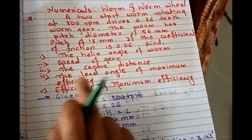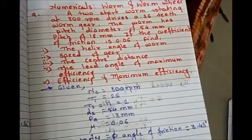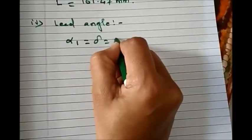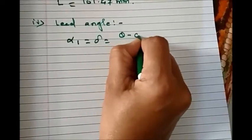Now next is the lead angle for maximum efficiency. We know that for lead angle, alpha 1, that is delta, equals theta minus phi divided by 2, and alpha 2 equals theta plus phi divided by 2.